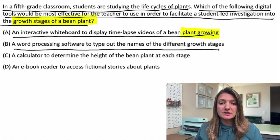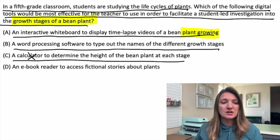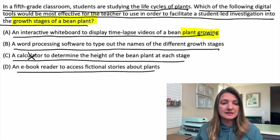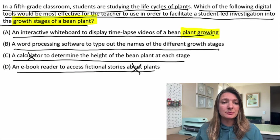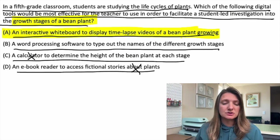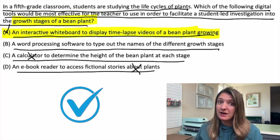Option B: word processing software to type out the names of the different growth stages. Option C: a calculator to determine the height of the bean plant at each stage — we don't really use a calculator for that. Option D: an ebook reader to access fictional stories about plants — that doesn't have to do with growth stages. So we're left with A and B, and A would be the most likely answer because it is the most interactive.